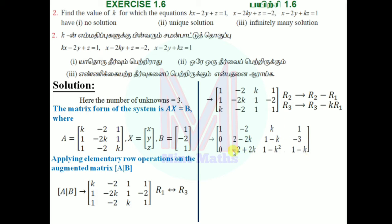Next, R3 → R3 + R2. Adding row 2 to row 3: 0+0=0, (-2+2k)+(2-2k)=0, and (k-k²)+(1-k) which simplifies. For the constant terms: (1-k)+(-3) = -2-k.